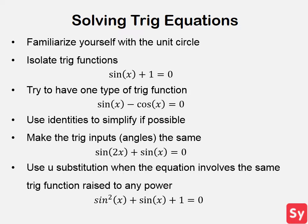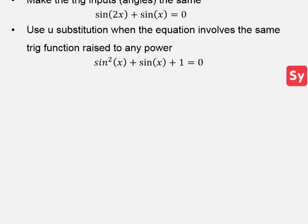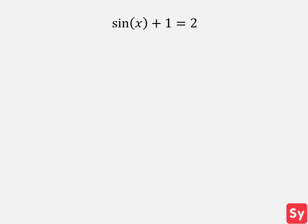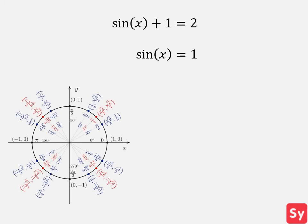Let's see some examples of solving trig equations now. First example: we have sine of x plus 1 equals 2. One of the tips is to isolate the trig function, so we subtract 1 from each side and get sine of x equals 1. Next, we look at the unit circle to see for what x, sine of x equals 1. We can see sine of x equals 1 when x equals pi over 2. Since making another full 2 pi cycle from pi over 2 also gives sine of x equals 1, our answer is x equals pi over 2 plus 2 pi n, where n is the number of cycles.